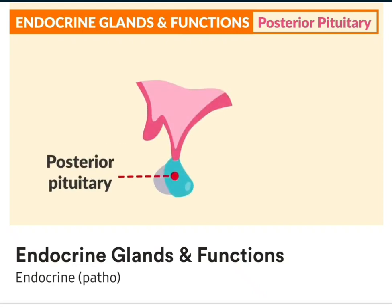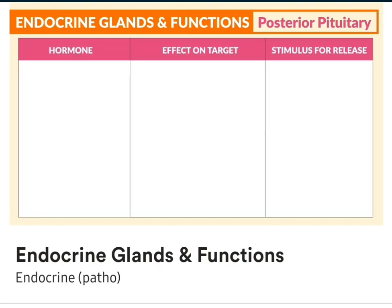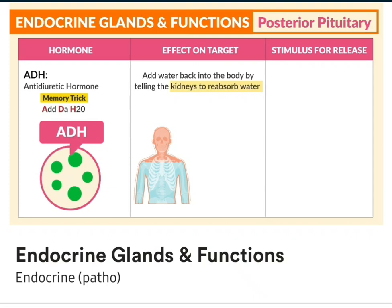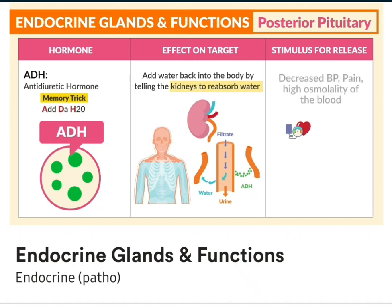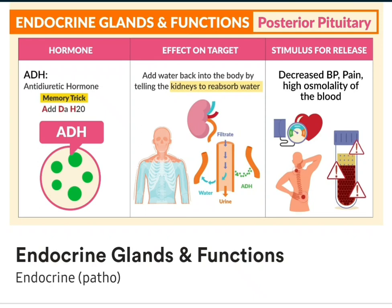Now moving on to the posterior pituitary. The posterior pituitary does not necessarily produce hormones directly, but rather stores and secretes hormones produced by the hypothalamus, which is what it's connected to. Now for the hormones — ADH, the antidiuretic hormone. The memory trick is ADH: Adds the H2O. Because the effect on the target is it adds water back into the body by telling the kidneys to reabsorb water. Its stimulus for release is decreasing blood pressure, pain, and even high osmolality inside the blood.